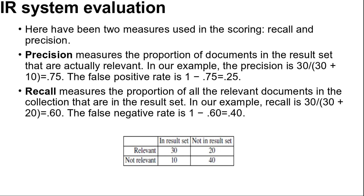Precision measures the proportion of documents in the result set that are actually relevant. In our example, precision is 30 divided by (30 plus 10), equal to 0.75. The false positive rate is 1 minus 0.75, equal to 0.25. Recall measures the portion of all relevant documents in the collection that are in the result set. In the example, recall is 30 divided by (30 plus 20), equal to 0.60. The false negative rate is 1 minus 0.60, equal to 0.40.